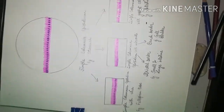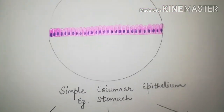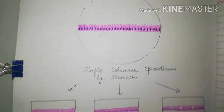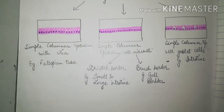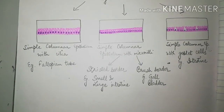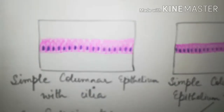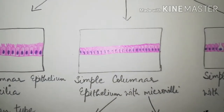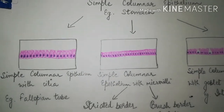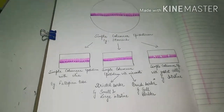So like this you have to draw simple columnar epithelium. You can see there are three varieties of it: simple columnar epithelium with cilia, simple columnar epithelium with microvilli, and simple columnar epithelium with goblet cells. Thank you for watching.